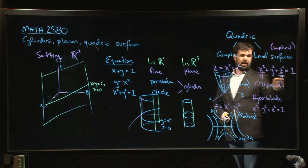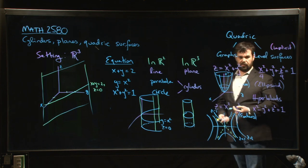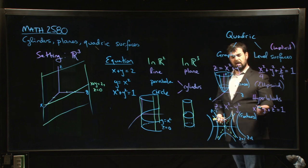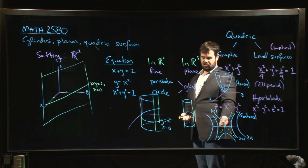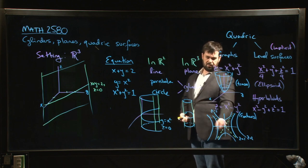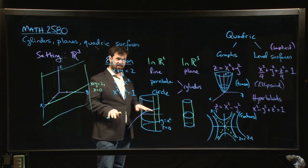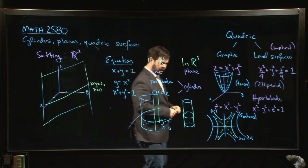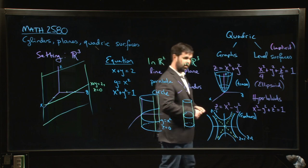We'll do some of these examples in class — how to draw an ellipsoid, how to draw hyperboloids. You should look at examples in the book before class. The hyperbolic paraboloid is the one surface that gives everyone trouble, including myself, so if you get the hang of that you'll be in good shape. That's it for this video — we'll move on to talk about notation in the next one before moving on to limits and continuity.